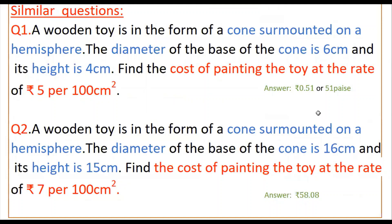Here is a practice problem: first find the total surface area of a similar wooden toy, and then find the cost of painting it at the rate of 5 rupees per 100 square centimeters. Try to find the total surface area of the toy on your own.